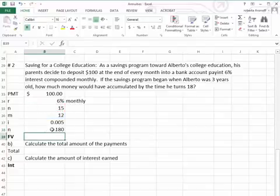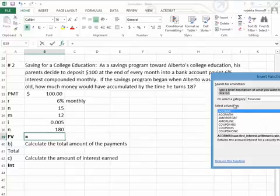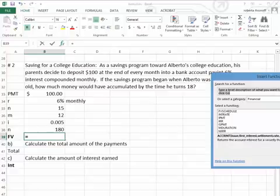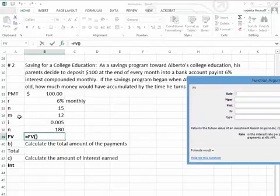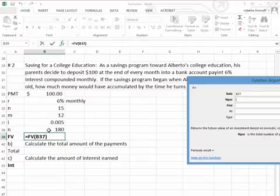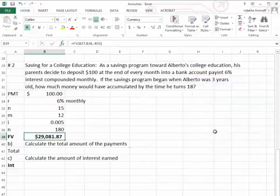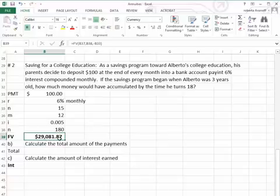Now we want to go to the future value. We can actually go to the FX. You see financial that way. And you can go down to FV. And again, we see the formulas. The rate is the periodic interest rate, which is the I. The N per is the 180. The periodic payment minus is the $100. And therefore, at the end of the 12 years, Alberto's College Education Fund will have $29,081.87.